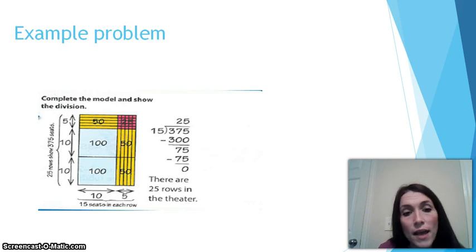I want you now to go ahead and look over where they worked this problem out in standard algorithm form. They have 375 divided by 15. And they've gone through and done all the steps of division: divide, multiply, subtract, and bring down. And they've found that there are 25 rows of seats in the theater.